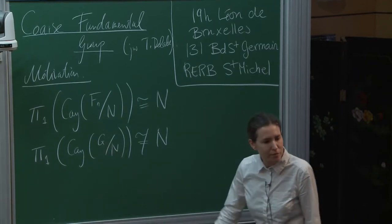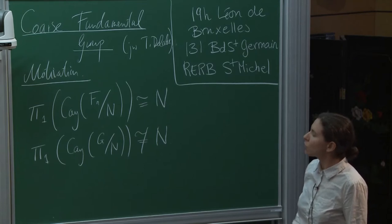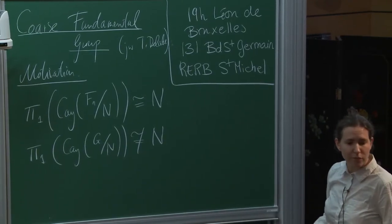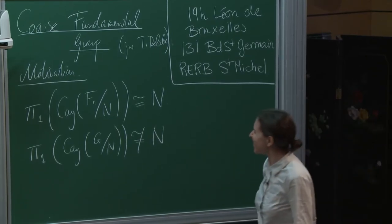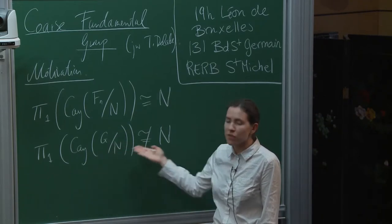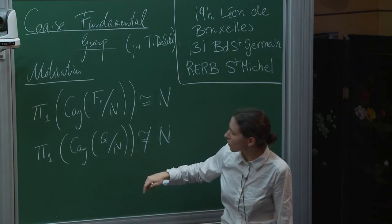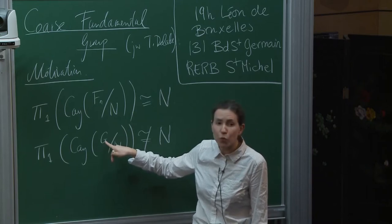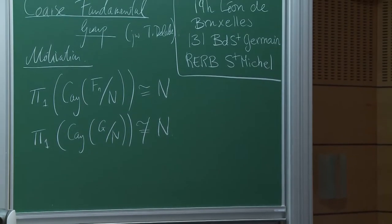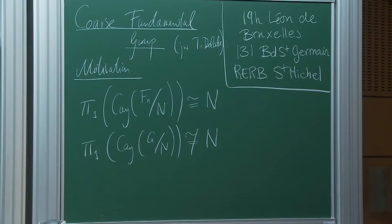In general, this may not work: if I look at the Cayley graph of some non-free group quotiented by some subgroup, the fundamental group will not equal N. Why? Because in looking at the loops in this space, I'm not just detecting the elements in N — I'm also detecting the elements which are already loops in G. What you'd like to do is mimic this behaviour for a non-free group, and the way to do that is via coarse fundamental groups. We need a coarse version of π₁, and one already existed, created by Barcelo, Kramer, Laubenbacher, and Weaver.